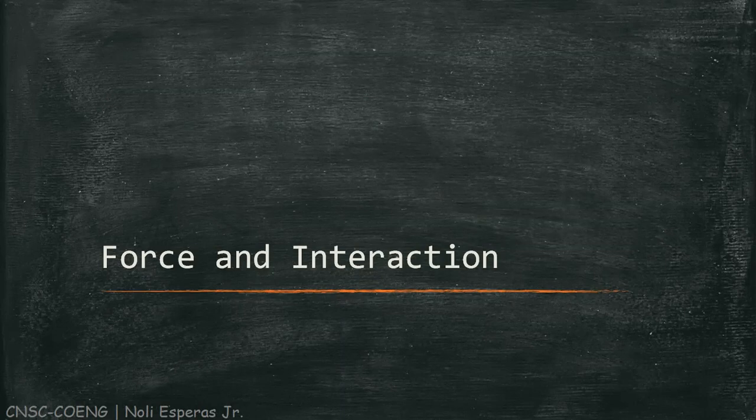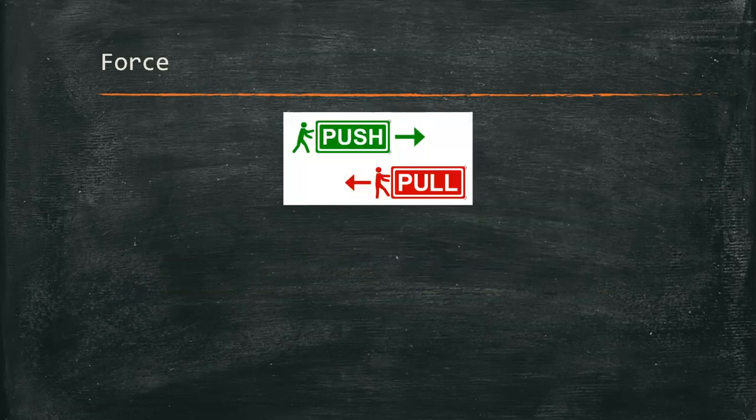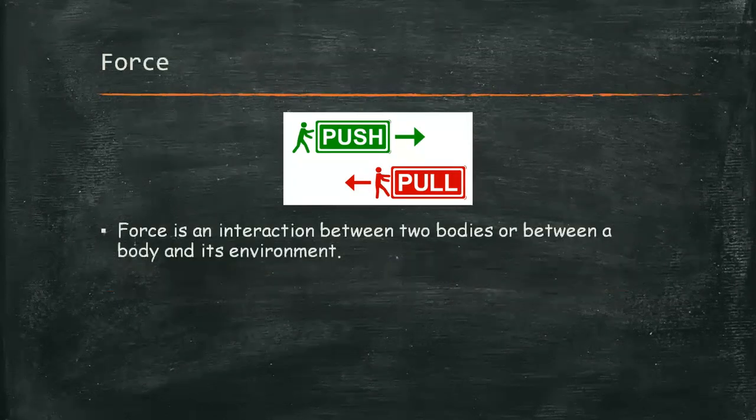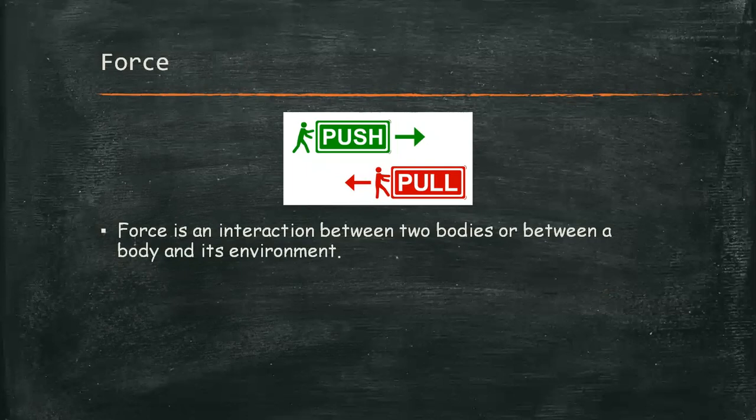Force and interactions. Force in common language is a push or pull. A better definition is that force is an interaction between two bodies or between a body and its environment. Force is a vector quantity. You can push or pull a body in different directions.